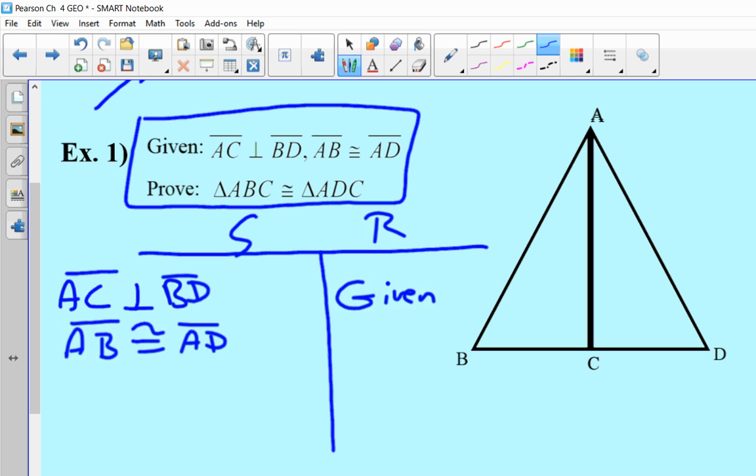Now, once again, they've given us some stuff as given, so let's go ahead and mark it. AC, so this vertical line is perpendicular to the base, so that's going to be right. And let's just make sure we see that too. And then AB is going to be congruent to AD.